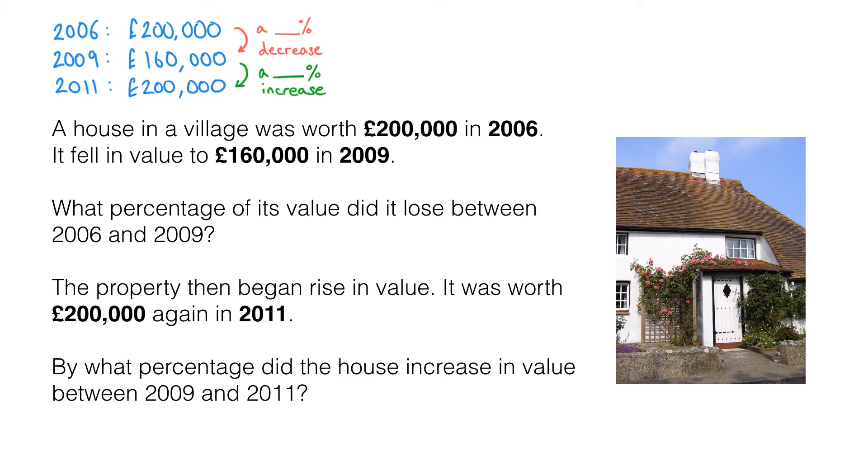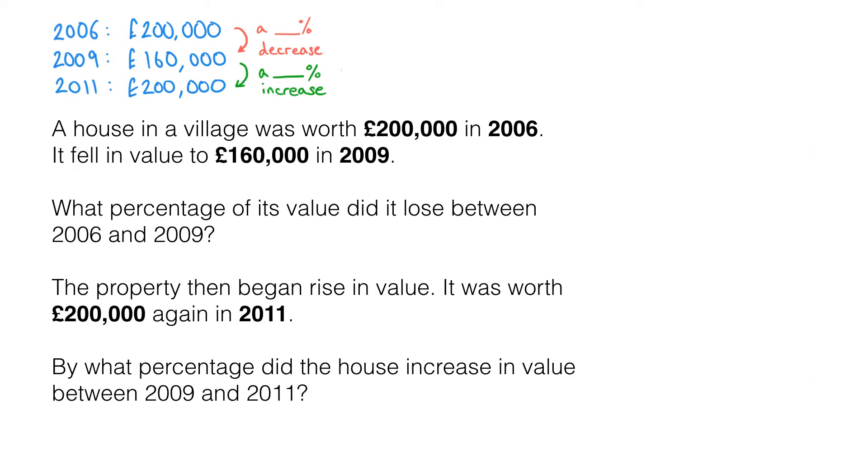In other words we are just looking for these missing numbers. Let's create some space here and start the first question. As we've seen in previous videos on percentages it often helps to start with fractions. So let's think about the new value over the old value as a fraction. In 2009 its value was £160,000 and in 2006 it was £200,000. So we are expressing the new value as a fraction of the old value.